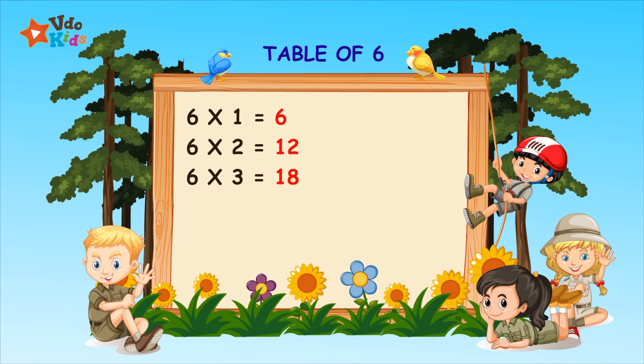Six threes are eighteen. Six fours are twenty-four. Six fours are twenty-four. Six fives are thirty.